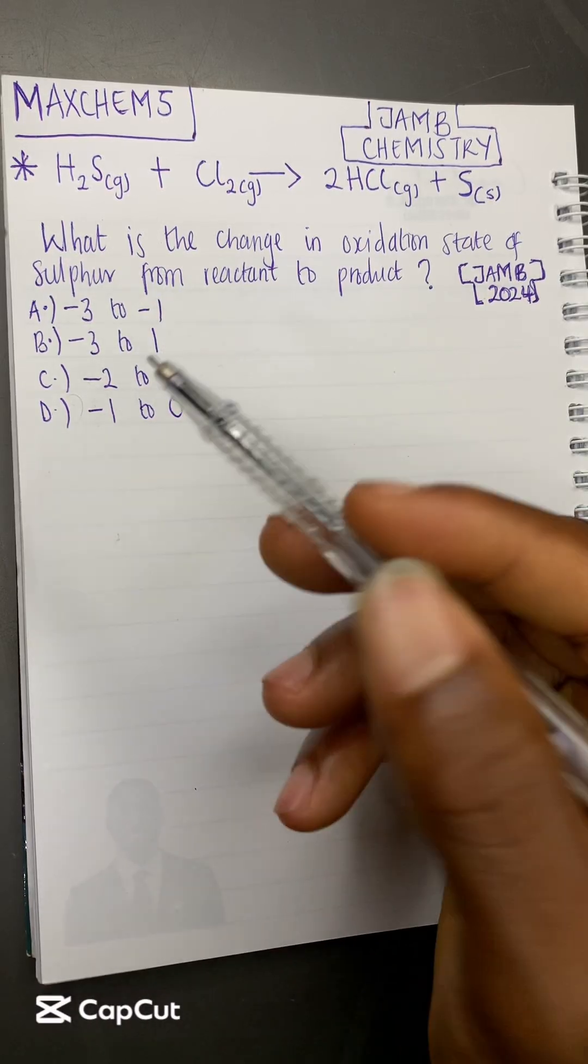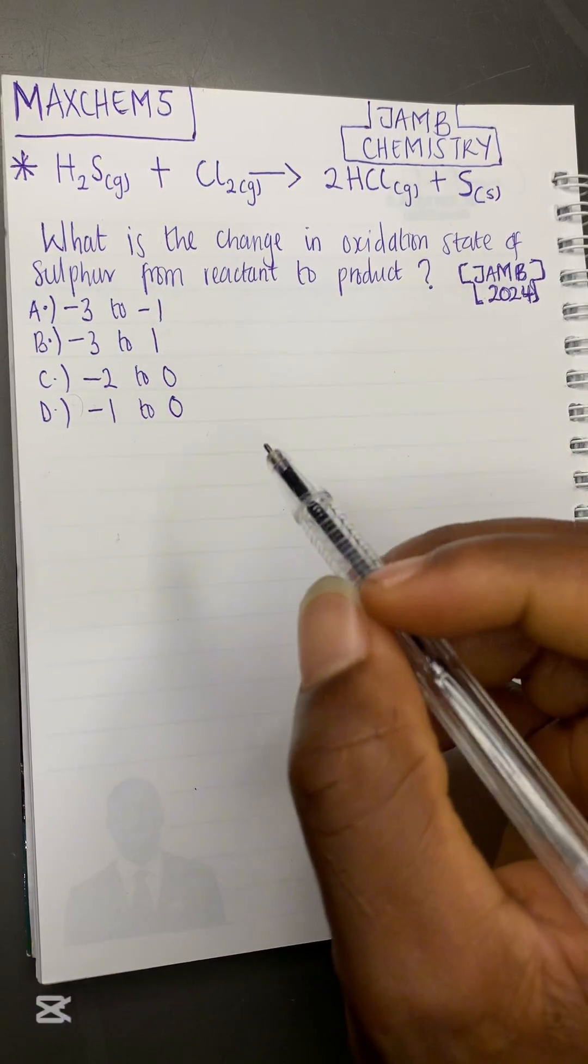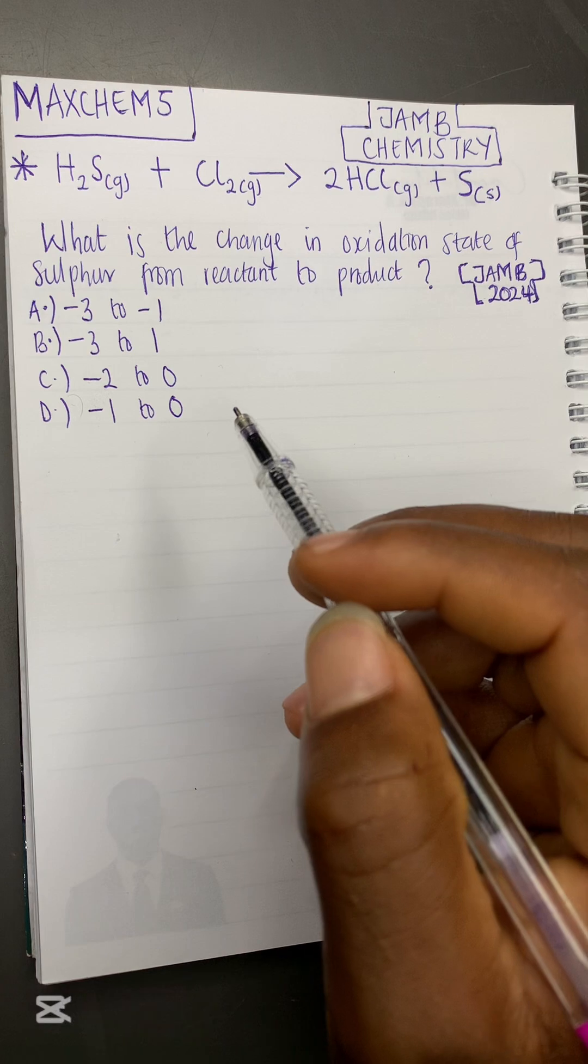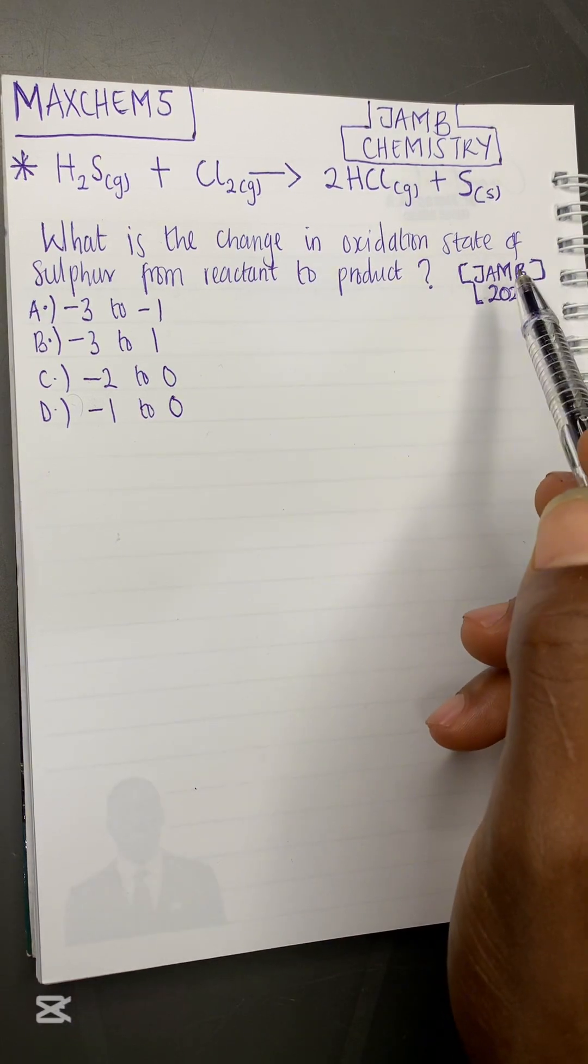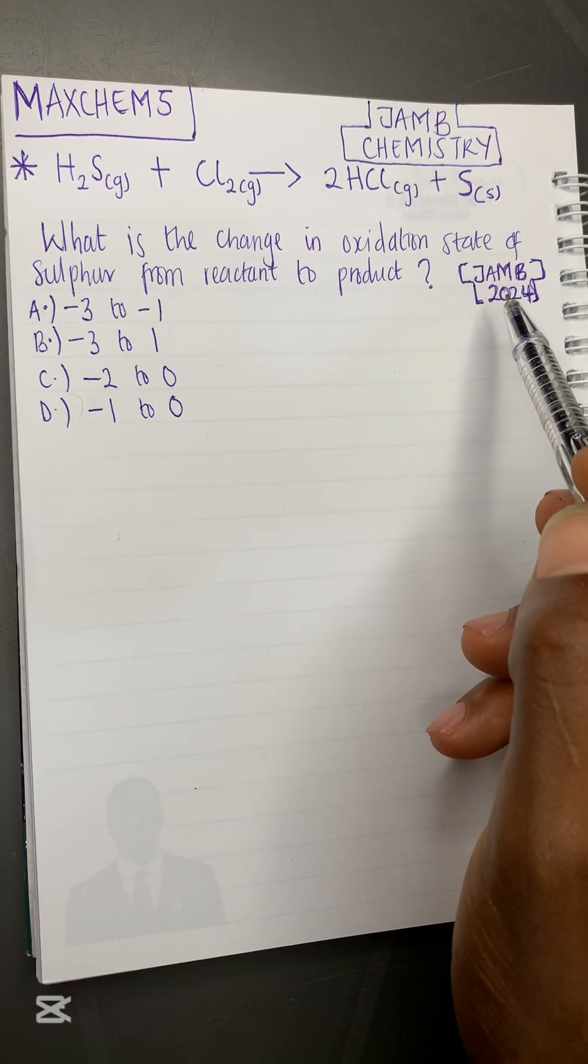Let's say you see this kind of simple question in your chemistry JAM exam. How do we solve it? It is very simple. Let us solve it together. This particular question was a JAM 2024 past question.